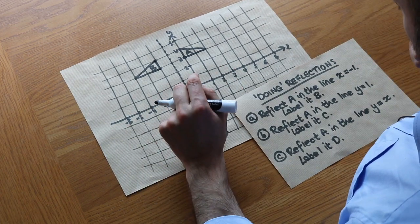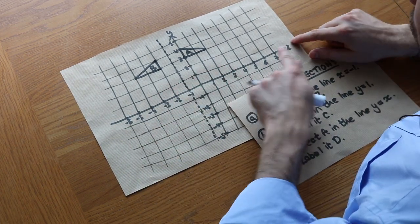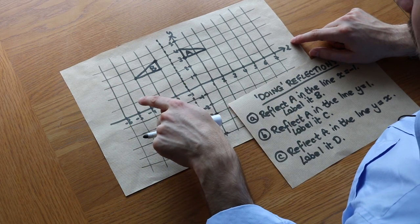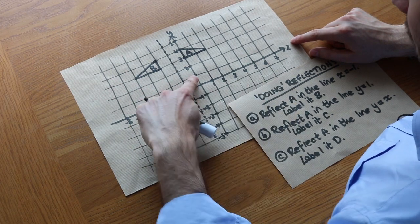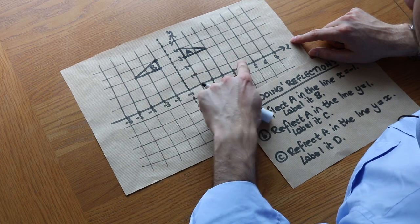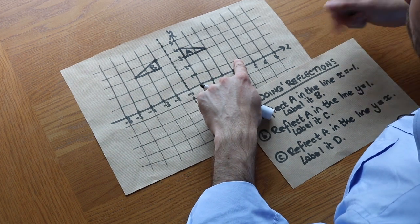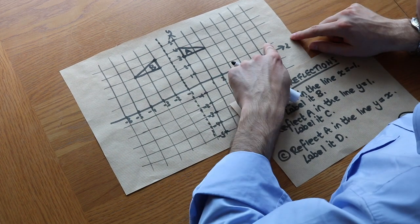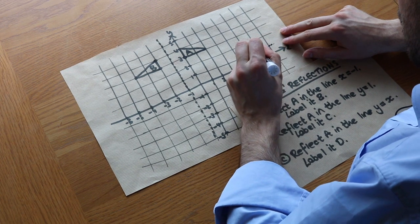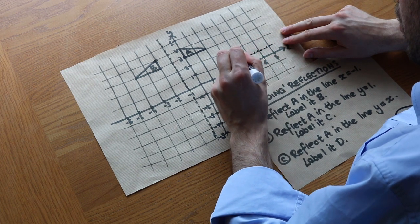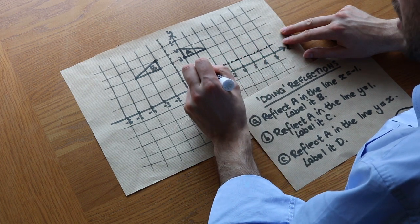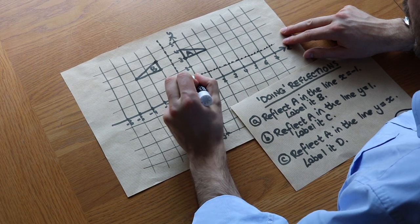To draw the line y equals one, we think of all points where the y value is one. For example, the point zero one, four one, and seven one all have y value of one, and we can see it's going to be this line of points cutting the y-axis at one.